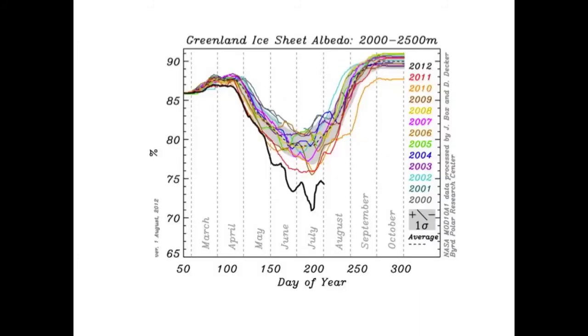This graph shows the albedo of the Greenland ice sheet. The different colors represent the albedo value for different years. The black line represents 2012, and the decline is very sharp, marking a new low.